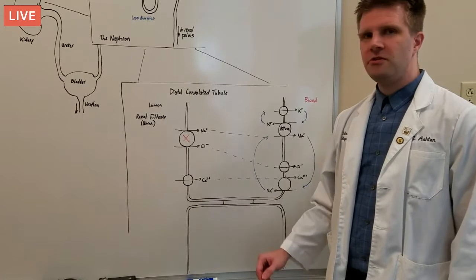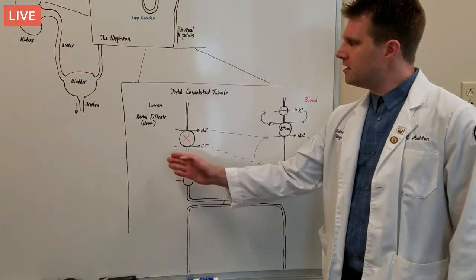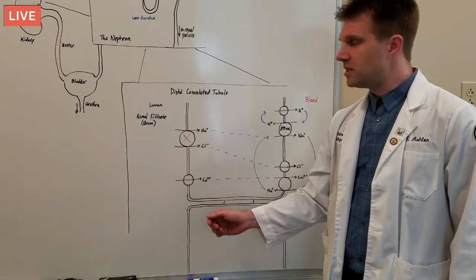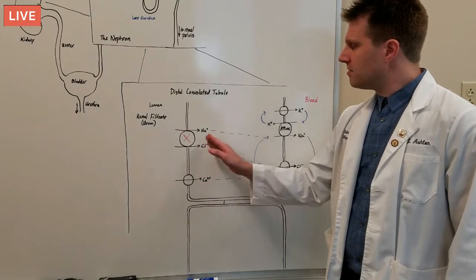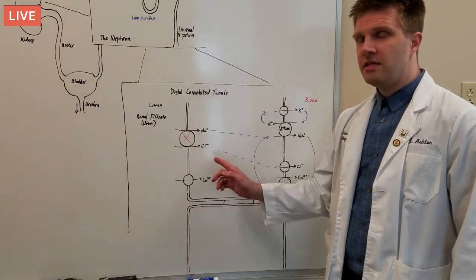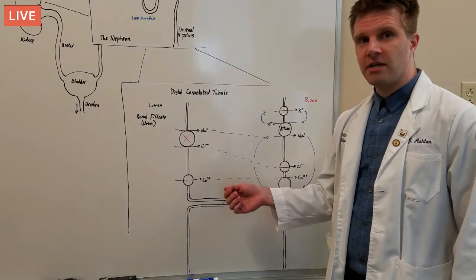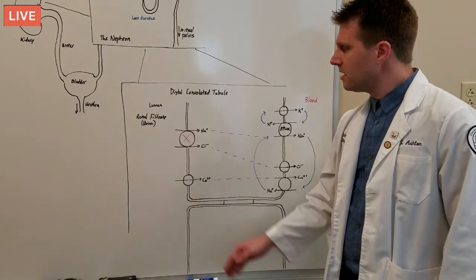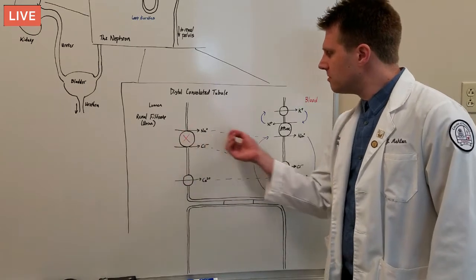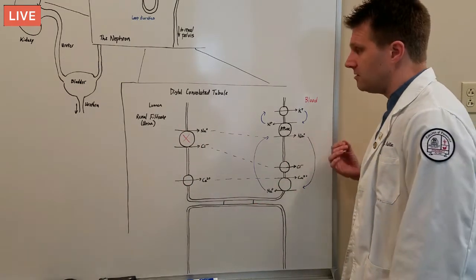In the distal convoluted tubule, the filtrate in the lumen of the nephron passes by a unique set of transporters. Here we have a sodium chloride symporter, and this is the symporter on which thiazide diuretics like hydrochlorothiazide act. By blocking its function, sodium is not reabsorbed into the body and back into the blood.